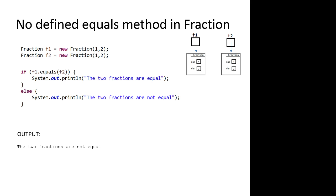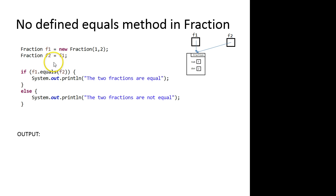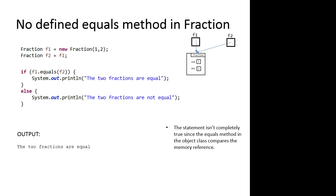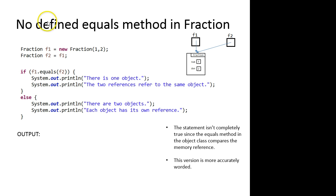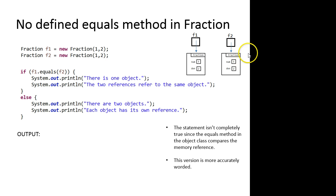That's because the equals method is currently comparing their memory references. If I change the setup so both references refer to the same object, the memory references are the same and they happen to point to the same thing, so the two fractions are equal. So more accurately: if f1.equals(f2) returns true, there is one object and the two references refer to the same object. Else there are two objects, each with its own reference.